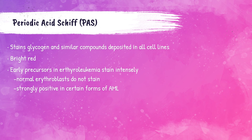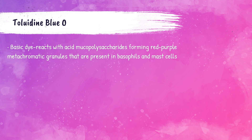Periodic acid-Schiff (PAS) stains glycogen in all cell lines, staining a bright red color. Early precursors in erythroleukemia stain very intensely, and in certain forms of AML the cells also stain very intensely. Toluidine blue O is a basic dye that reacts with granules present in basophils and mast cells.